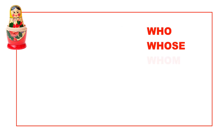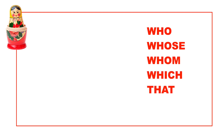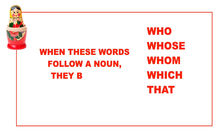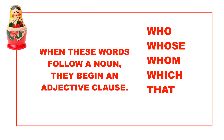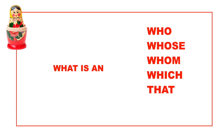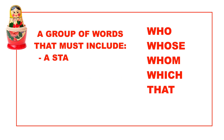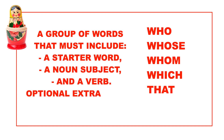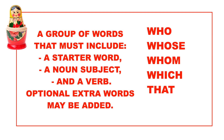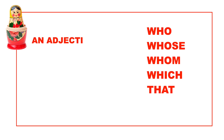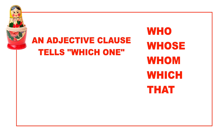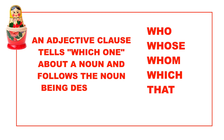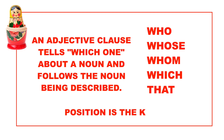Who, whose, whom, which, and that. When these words follow a noun, they begin an adjective clause. Position is the key. What is an adjective clause? A group of words that must include a starter word, a noun subject, and a verb. Optional extra words may be added. An adjective clause tells which one about a noun and follows the noun being described. Position is the key.